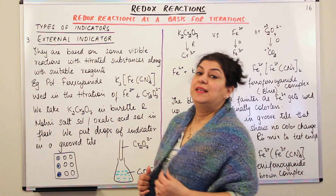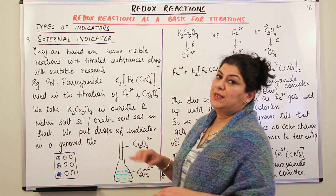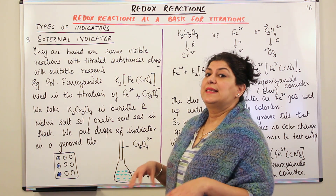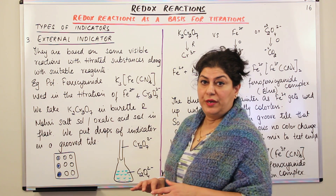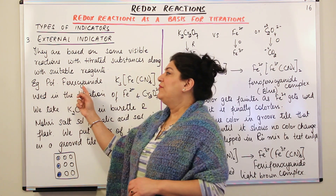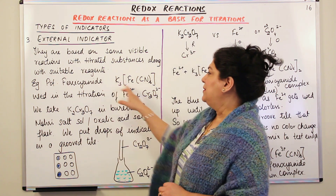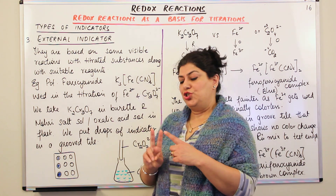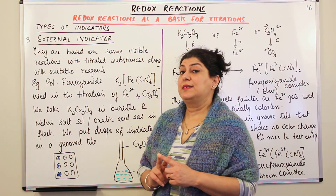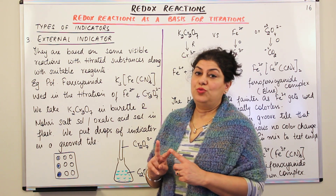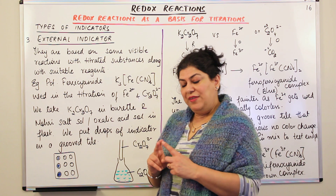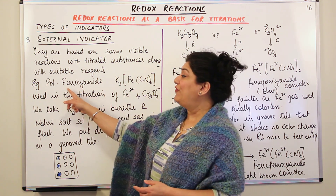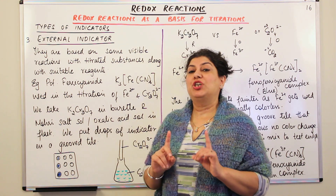Now, the titration we did — taking oxalic acid and potassium dichromate, where the internal indicator was diphenylamine with a little orthophosphoric acid — when you are using an external indicator instead, we do not use diphenylamine and orthophosphoric acid. Instead, we use the indicator potassium ferricyanide. Let me explain this formula: potassium has a charge of plus one — it is an alkali metal. Iron can show an oxidation state of plus two, which we call ferrous iron, or plus three, which we call ferric iron. The name itself tells us — it is ferric cyanide, so it is ferric iron, meaning iron should have a charge of plus three.